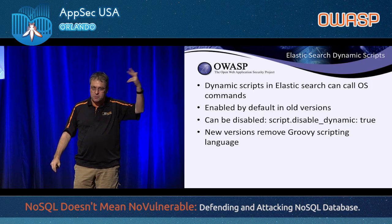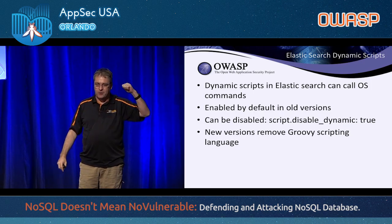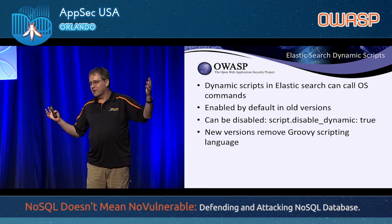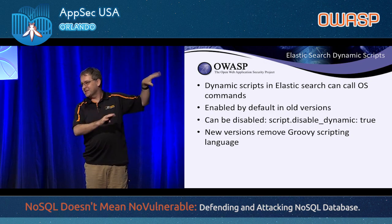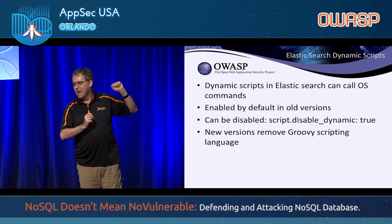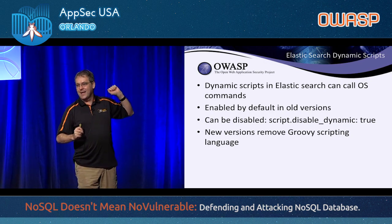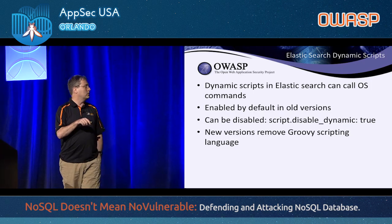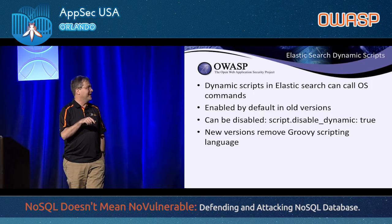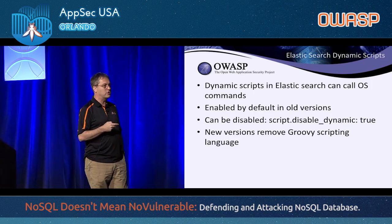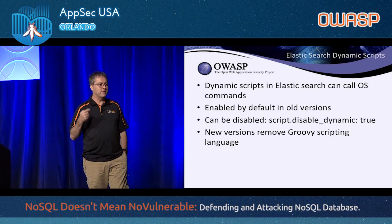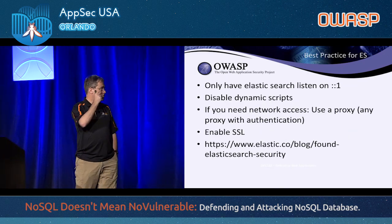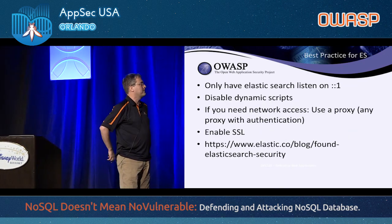As a developer, you always want power — security is someone else's problem. In older versions where it's still enabled, you can disable the feature, but in current versions it has really just been removed. Elasticsearch has a document that tells you best practices — only have it listen on loopback. Great idea until you try to put it in the cloud and remotely connect to it, at which point that doesn't work very well.